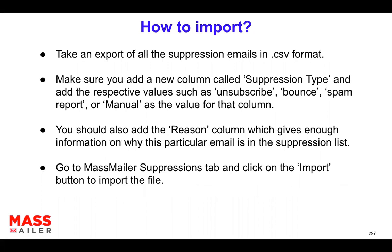So this is the reason why you would do it. And how do you do it? It's quite easy. You just have to make sure that you have all the suppression emails in the format of CSV, because we're going to do a bulk import. So if you can take an export of all the suppression emails from the other system, do that. Make sure that you get all the emails and the relevant information. The bare minimum you definitely need is the email address and what kind of suppression type it is — for example, unsubscribes, bounces, or spam reports — and you'd want a column showing the respective suppression type value.